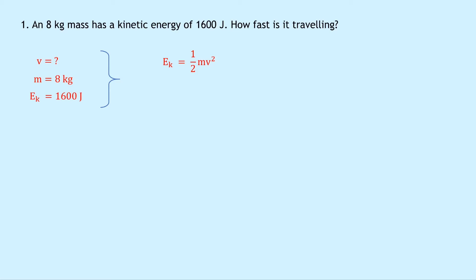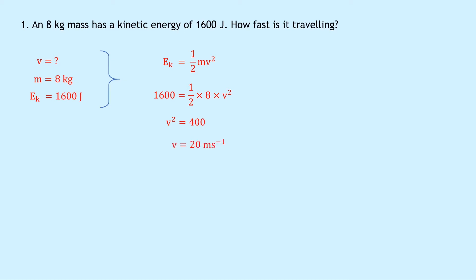Substituting in our numbers, we have 1,600 equals a half times 8 times v squared. Then we multiply both sides by 2 to get rid of the fraction and divide both sides by 8, and we end up with v squared equals 400. Taking the square root of both sides, we have v equals 20 meters per second.